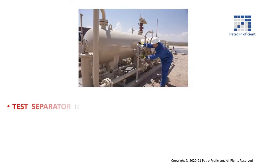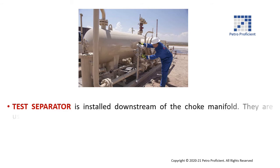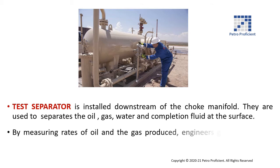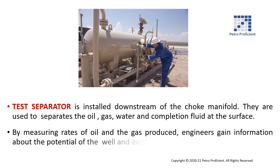The test separator is installed downstream of the choke manifold. It is used to separate the oil, gas, water, and completion fluid at the surface. By measuring rates of oil and gas produced, engineers gain information about the potential of the well and expected oil or gas production.